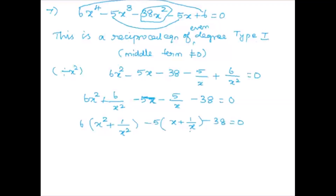We use substitution: let y = x + 1/x. Squaring both sides: y² = (x + 1/x)² = x² + 2 + 1/x². Therefore x² + 1/x² = y² minus 2. Substituting: 6(y² − 2) minus 5y minus 38 equals zero.